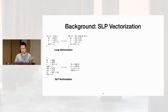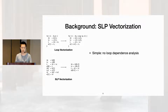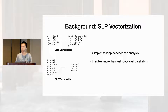Compared to loop vectorization, SLP is both simpler to implement because you don't need any complex loop analysis to rule out loop-carried dependencies. It's also more flexible because it works well even when the parallelism doesn't align perfectly along each loop iteration.